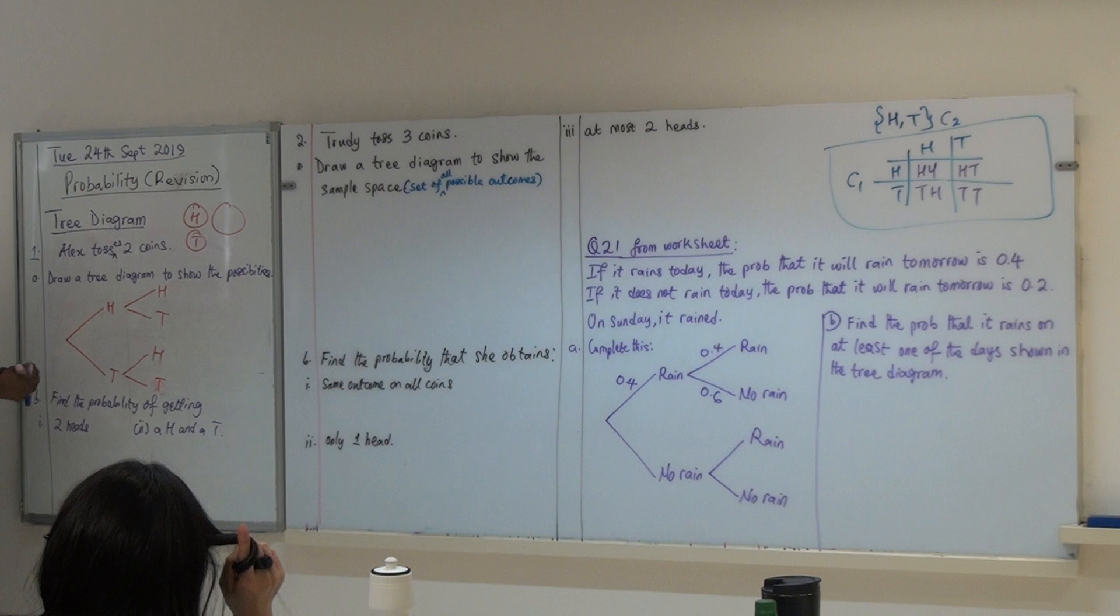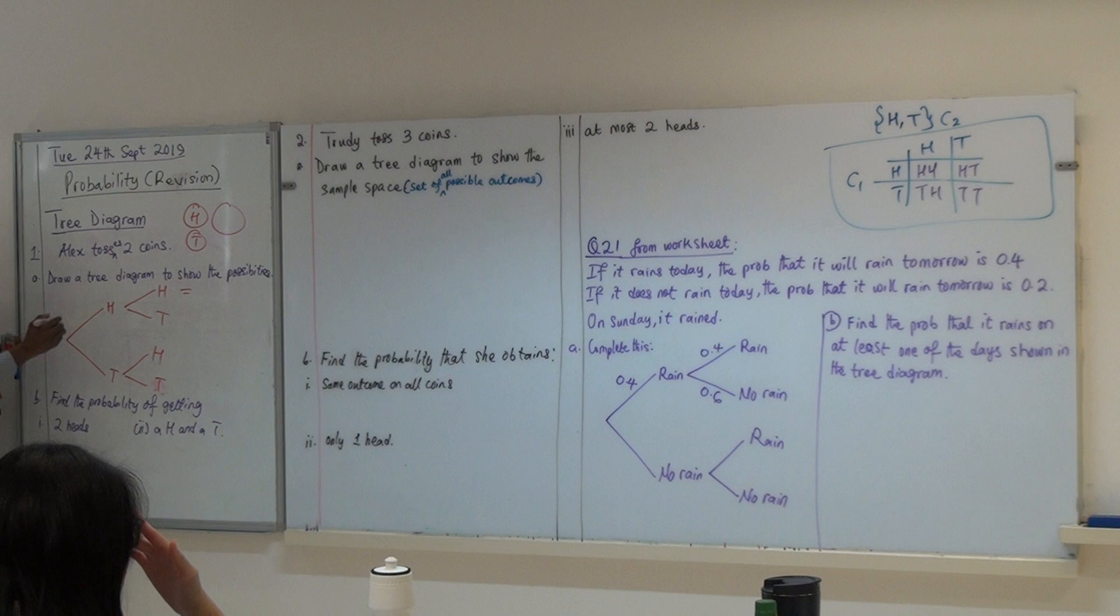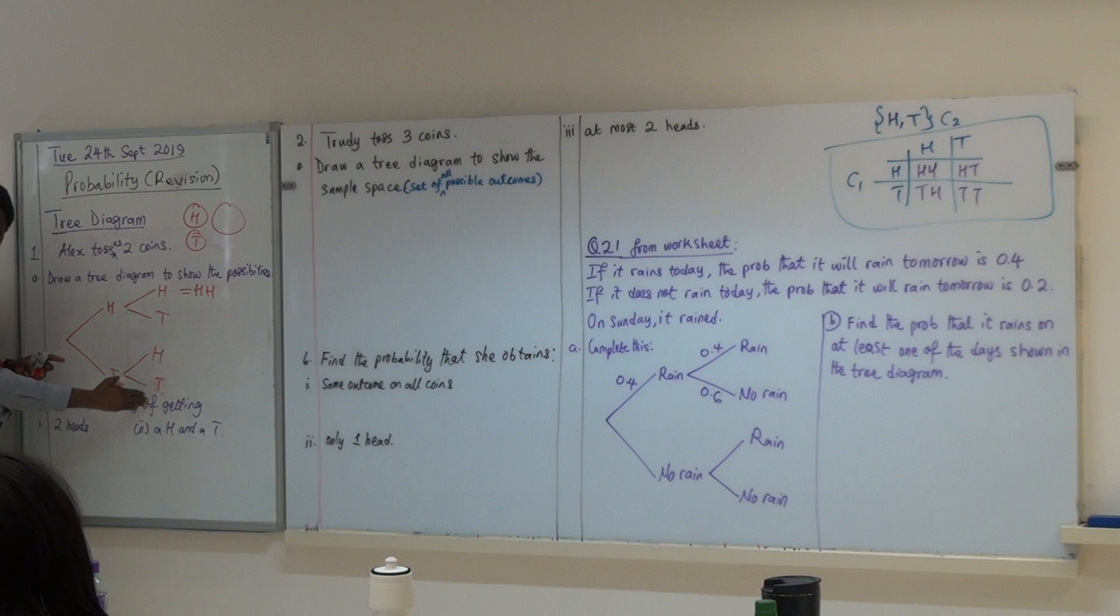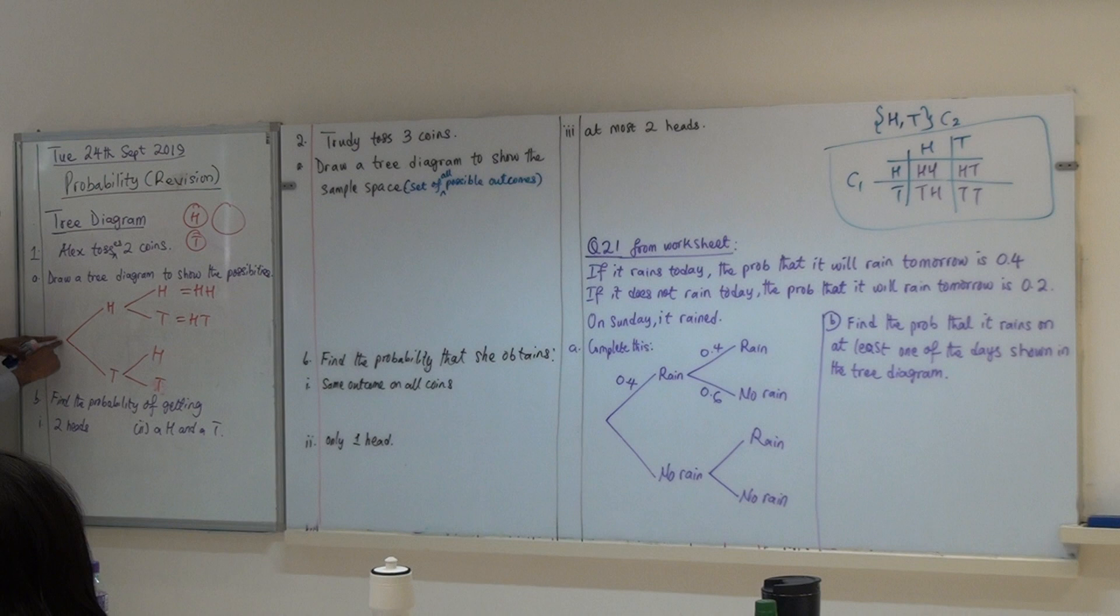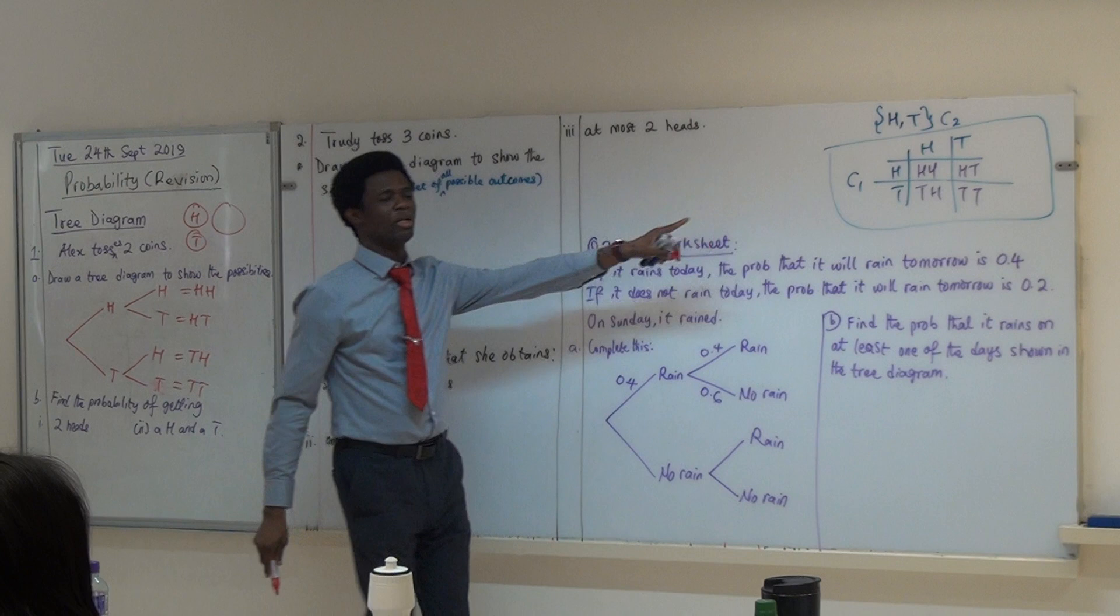This tree diagram shows all the possibilities. What do I mean by that? If the first is head and the second is head, so this is like the first one, so the layers of the tree, it means how many coins you are dealing with. So, the first is head and the second is head, then you get head and head. If the first is head, but the second toss is tail, remember this is for the second, then you get what? Head, tail. Similarly, your first coin could have been tail, and the second could have been head, then you have what? Tail, head, and finally, tail, tail.